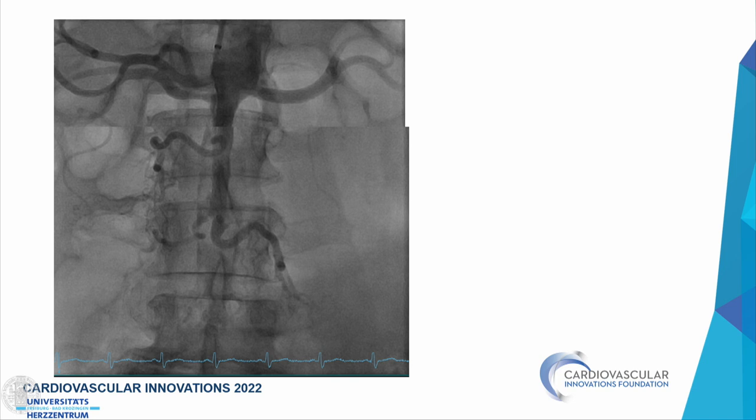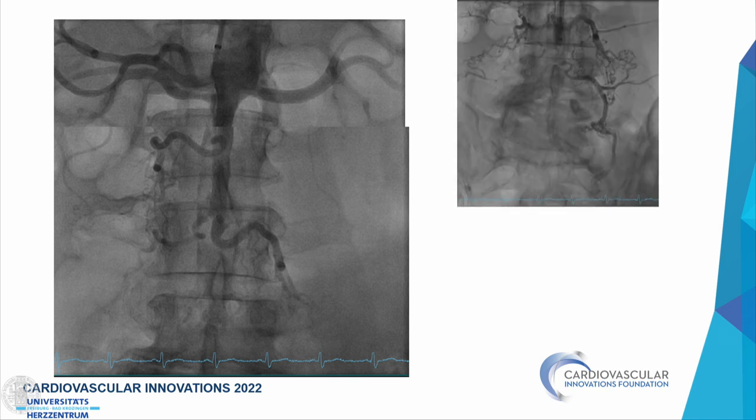A 90 cm long 6-French sheath is inserted via the left brachial access, which is preferred because it saves about 10 cm of length compared to the right arm and avoids crossing the carotid artery origins. The angiogram confirms the MR imaging findings.